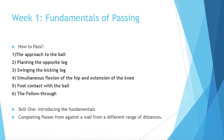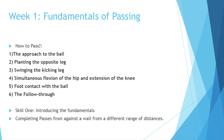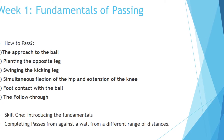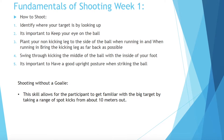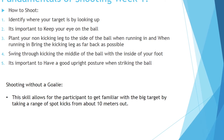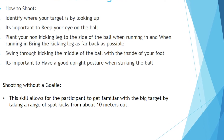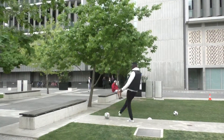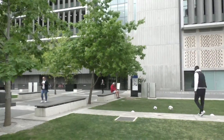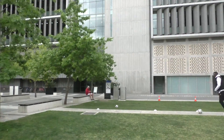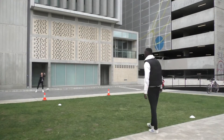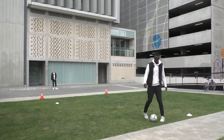In week one, we introduced the fundamentals of passing and shooting. For passing, we were completing passes against the wall from a range of different distances, allowing the participant to get a feel for what passing is like. For shooting, the skill was shooting without a goalie, allowing the participant to get familiar with the big target and taking a range of spot kicks from about 10 metres out.